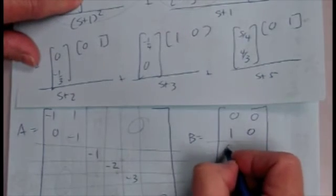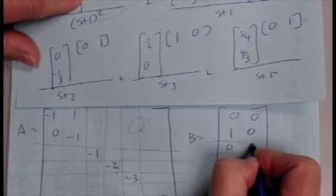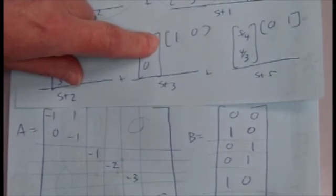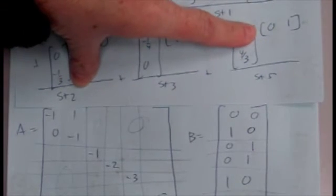And then our second, first order, negative 1 block for B would be 0, 1. S plus 2 has a 0, 1. Our S plus 3 has a 1, 0, and our S plus 5 has a 0, 1.